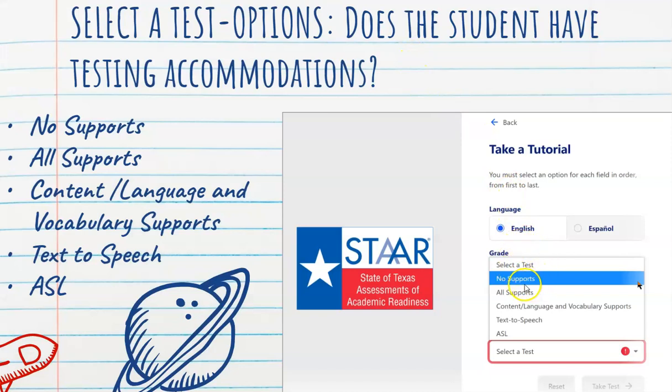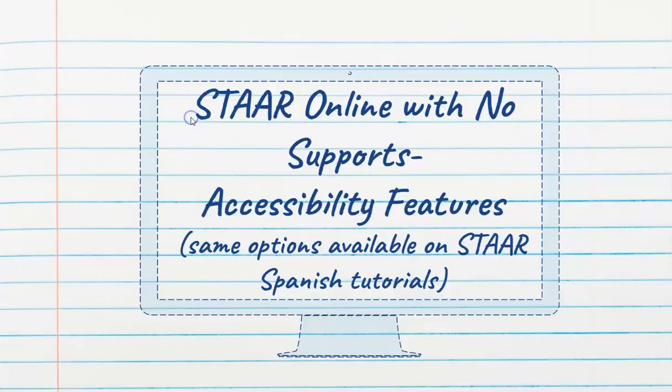And also it says to select a test, whether or not you get supports. Now, you know if you get supports. If you don't know if you get supports, you don't get supports. If you get supports like you get extra time or something like that, that's something to click on All Supports. You will know if you get supports at this point.